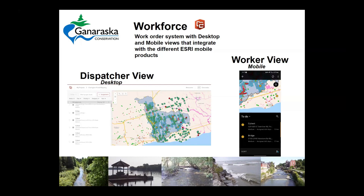There is a dispatcher view and a worker view. The dispatcher view is the web-based desktop view. It gives you the ability to create assignments, set priorities, set due dates, and set which worker is assigned to each task. That gives you the ability to monitor and see what's going on with your workers in the field from the office. It also shows tracking and current location.